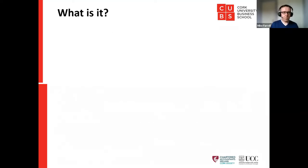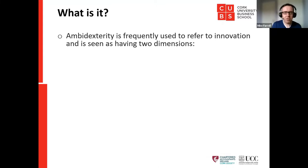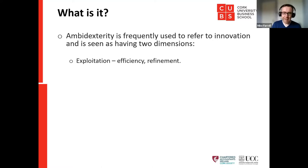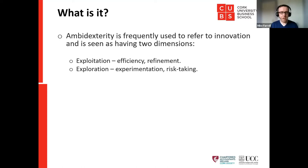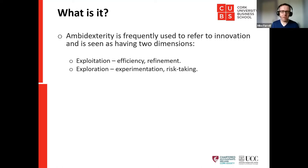Continuing with what ambidexterity means in terms of innovation — a lot of people have a broad definition of innovation, but there are actually two main sides to it. There's exploitation, which is efficiency and refinement, and then there's exploration, which is experimentation and risk-taking. Ambidexterity is about both exploiting and exploring. Some people call these incremental innovations and radical innovations. This concept applies regardless of what function or type of organisation you're in.